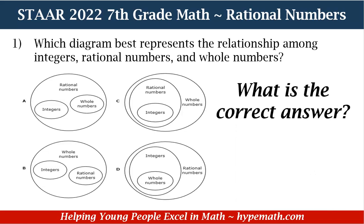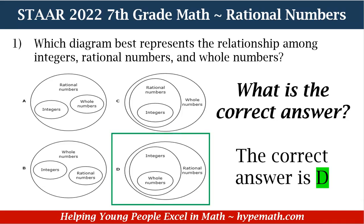So what is the correct answer? If you said D, you are absolutely correct. The diagram that best represents the relationship between integers, rational numbers, and whole numbers has whole numbers as the innermost circle, then integers, and then the larger circle that encapsulates everything is rational numbers.